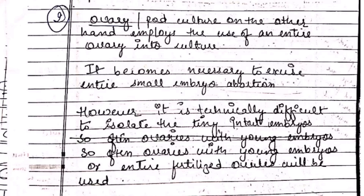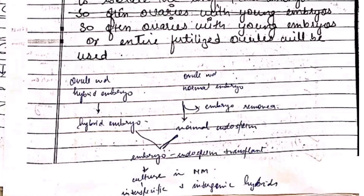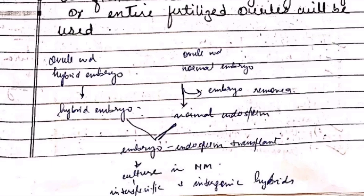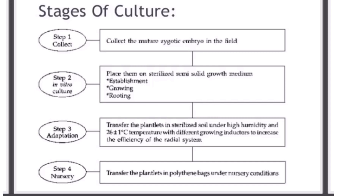All culturing must be done under maintained temperature, humidity, and photoperiod. A flowchart shows the transfer of plant material into culture medium — one shows ovule with hybrid embryo and another with normal embryo — and finally plantlets are transferred to soil. The process can be summarized in four steps: collecting, in vitro culture, adaptation, and transfer to the nursery.